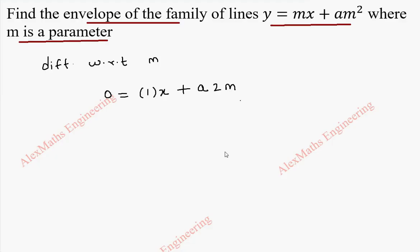We have to find what is m and substitute it in the curve. So this becomes minus x is equal to 2am, and from this, the value of m is minus x by 2a.